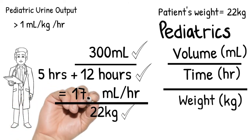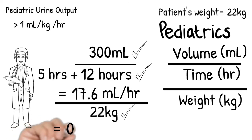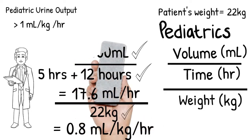Remember volume over time over patient's weight. What is his pediatric urine output? Yes, it's 0.8 mls per kilogram per hour.